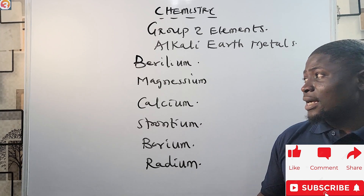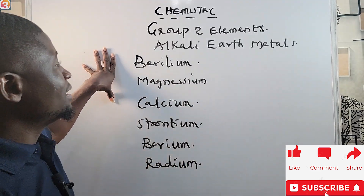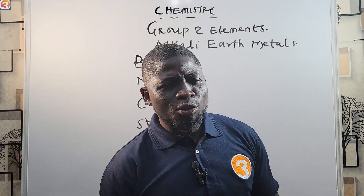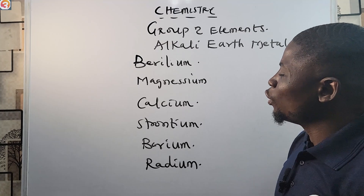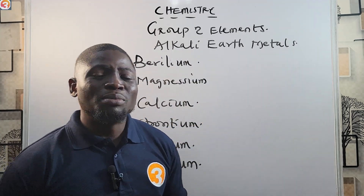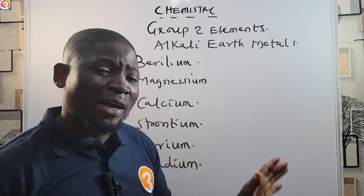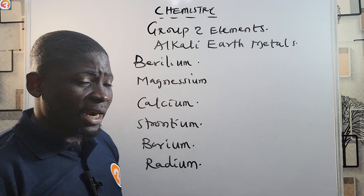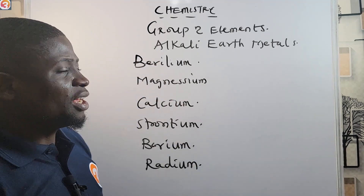As I said, families of elements share similar characteristics or properties. Make sure you know these elements — if an exam asks which element is not in group two and you don't know, you'll miss a simple two-mark question. Know the elements in each of the major eight groups, excluding the d and f block. Beryllium, Magnesium, Calcium, Strontium, Barium, and Radium are in group two.